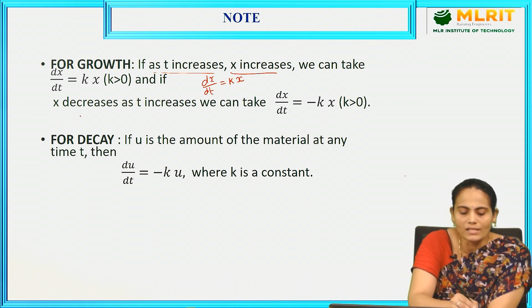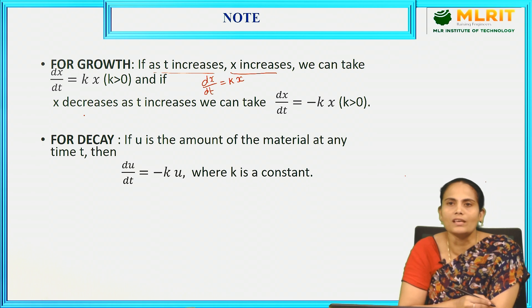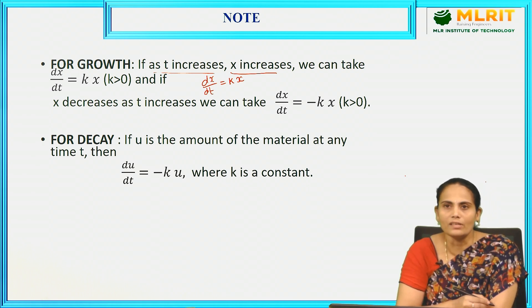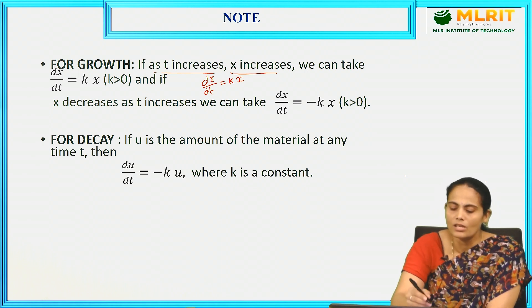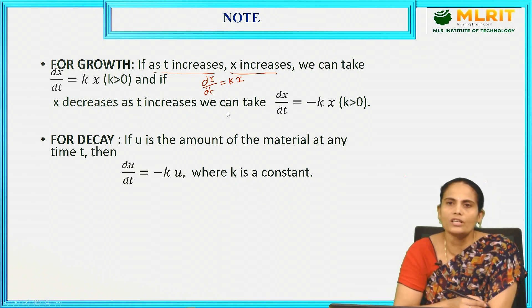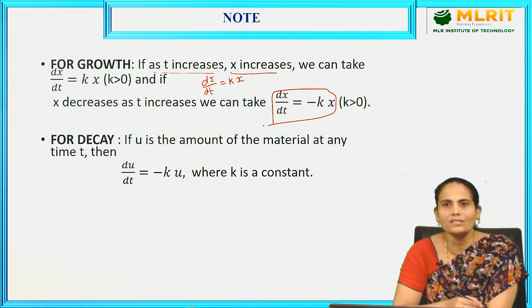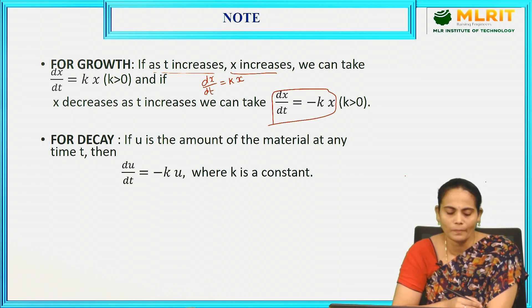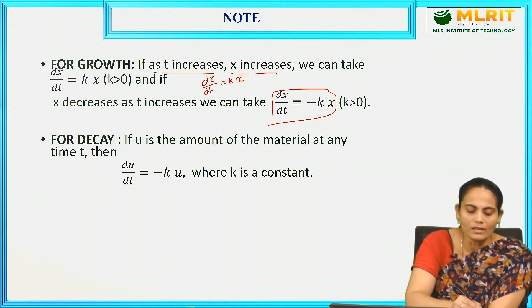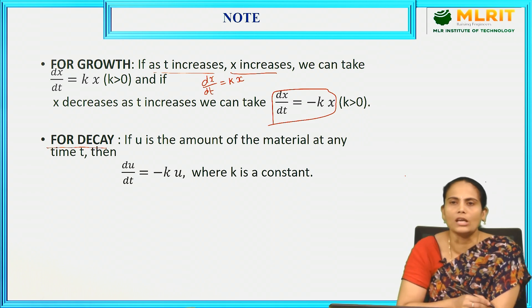For decay, as x decreases and t increases, we take the proportionality constant as negative k. So dx/dt = −kx is the first order first degree differential equation. Case 2 is for decay.